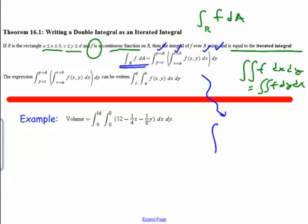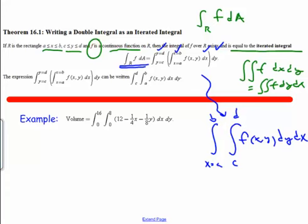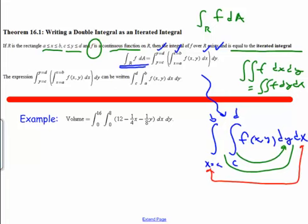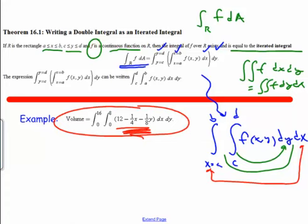I could also write the same thing as the integral from x equals a to b of the integral from y equals c to d of f(x, y) dy dx. A careful thing to recognize is that these limits go with the dy, so we integrate the inner integral first and then work to the outer. We can use this iterated integral to evaluate or find volumes of two-variable graphs. On the next page we've got a representation of what we're looking at to find this volume.